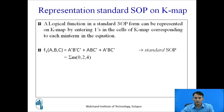A logical function in standard SOP form can be represented on K-map by entering 1s in the cells corresponding to each min term in the equation. For example, f1(a, b, c) = Ā·B̄·C̄ which represents min term 0, plus A·B·C̄ which represents min term 4, plus Ā·B·C̄ which represents min term 2. In SOP form, this equation can be written as summation m(0, 2, 4).